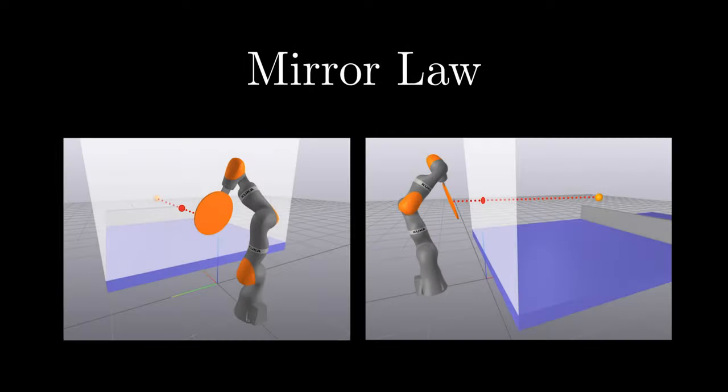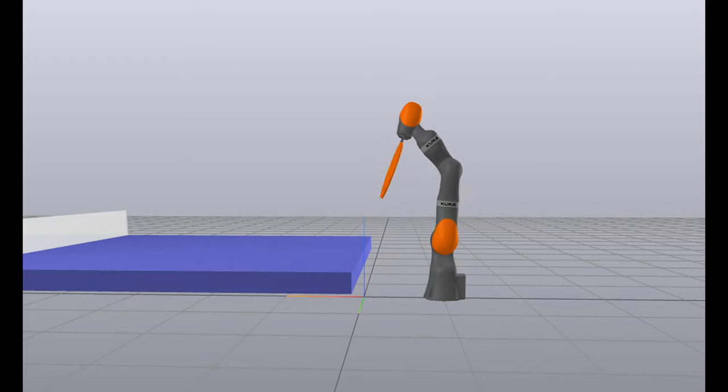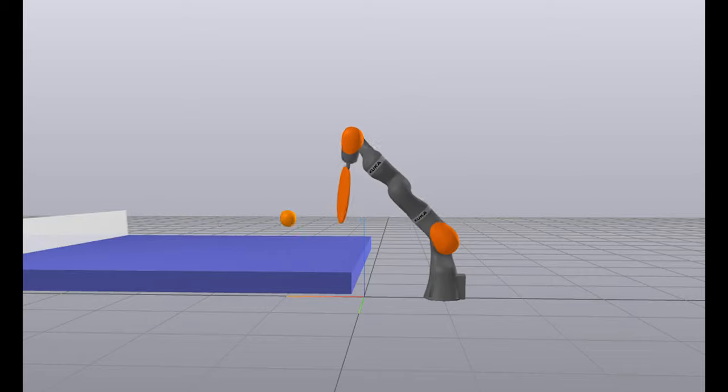Our first physics-based controller implemented the mirror law. Here, the robot mirrors the position of the ball across a contact plane up to a scaling factor. This method guarantees contact with the ball, but it is hard to control the ball's trajectory after contact. This is because the paddle's trajectory is determined by the ball's trajectory, so there is little flexibility in the robot's movements.